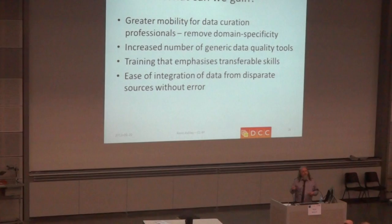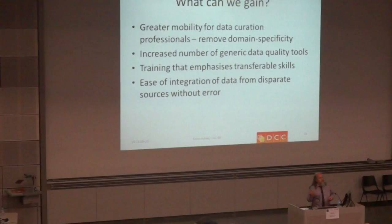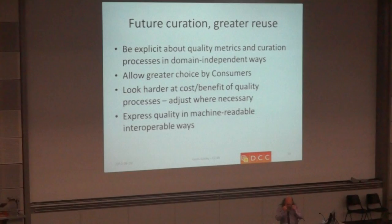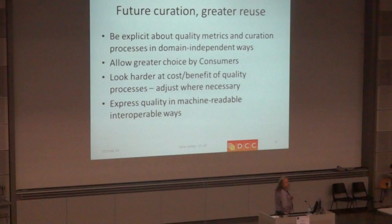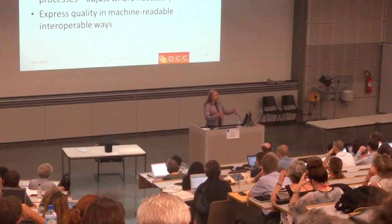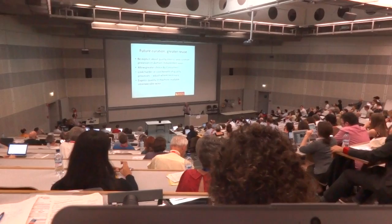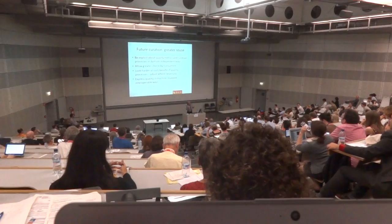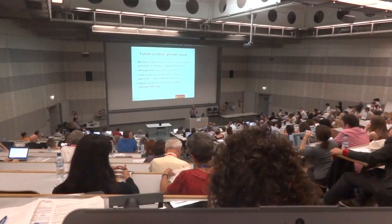Most importantly, when thinking about maximising data reuse, if we describe quality in a generic way, it makes it that much easier to get the interoperability we're talking about — to integrate data from different sources without error. At the moment, sometimes we can bring together data and not realise that different quality parameters have been applied, and therefore end up, perhaps, with bad science at the end of it.